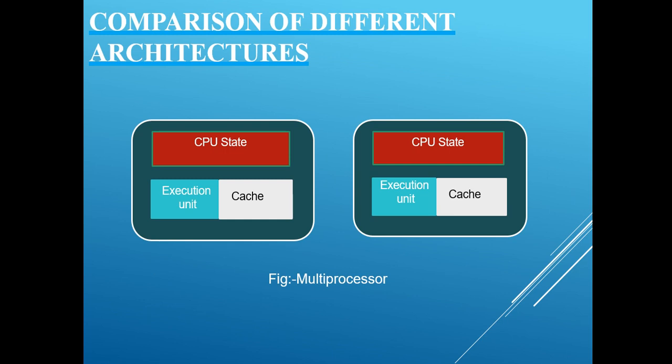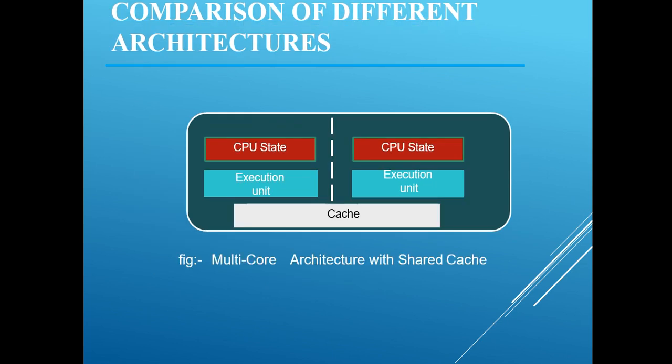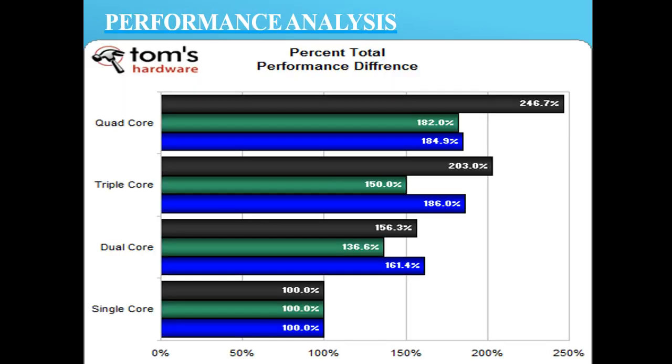Continuing the comparison, multi-core architecture can also support shared cache. Now for performance analysis, this is a table from the website Tom's Hardware.